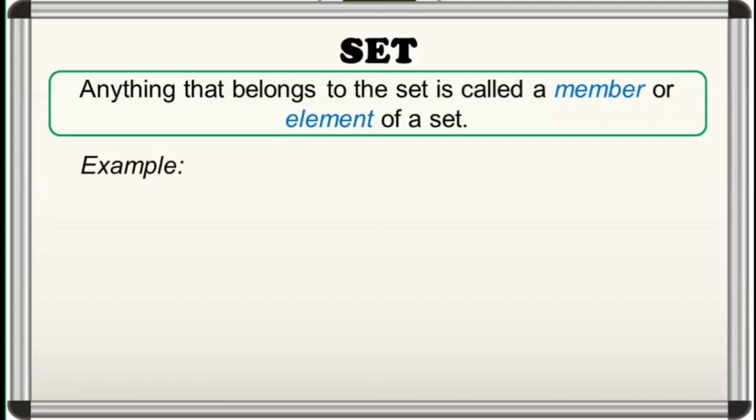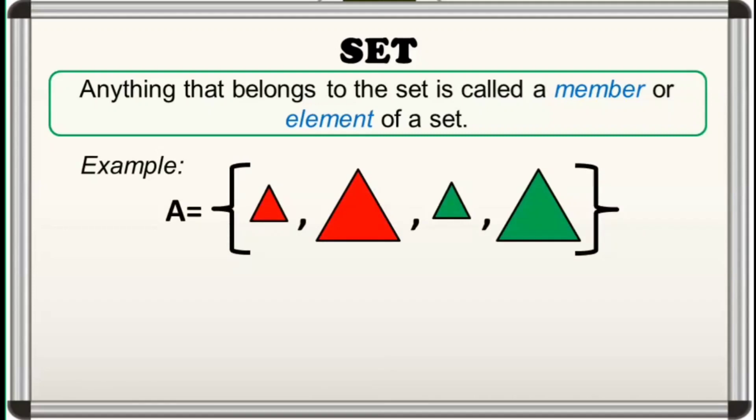For instance, in set A, set of triangles, we say that this is an element of set A, or this one, since both are triangles. The symbol used to denote this relation is the Greek letter epsilon, and can be read as 'is an element of A'.